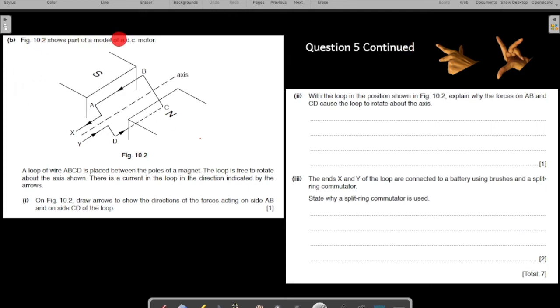The figure shows the part of the model of a DC motor. DC motor as you know it is two magnets and in between there is a coil rotating. A loop of the wire ABCD is placed between the poles of the magnet. Always a good idea as you read the question, you get some details about the figure. Go to the figure and locate those information. So, you have located where ABCD is in the picture. ABCD.